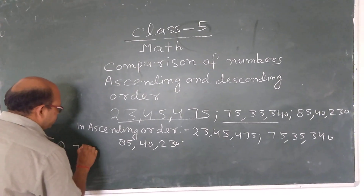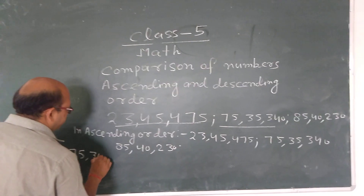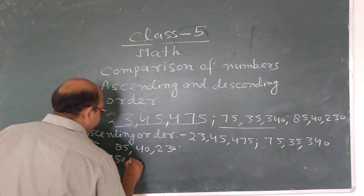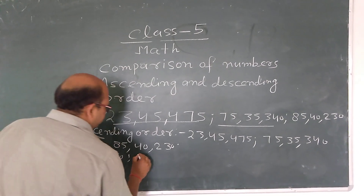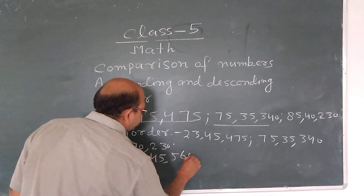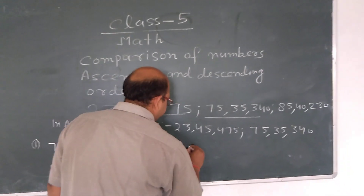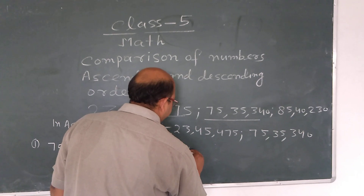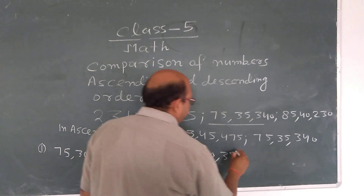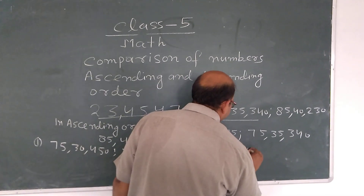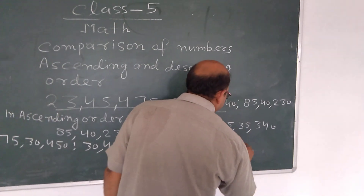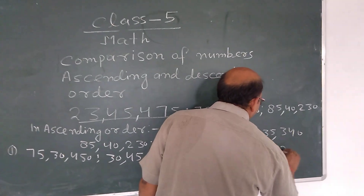In other questions, if the numbers are: 75 lakhs 30,450, then 30 lakhs 45,560, and another 70 lakhs 35,540, and 30 lakhs 40,250.